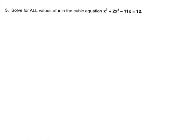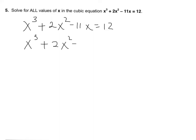So if we have x cubed plus 2x squared minus 11x equals 12, you have to transform this cubic equation into an equation where the other side is 0 — so that is x cubed plus 2x squared minus 11x minus 12 equal to 0.